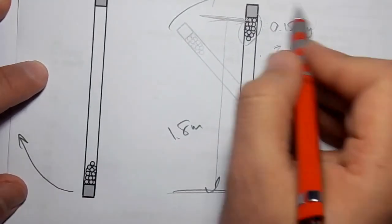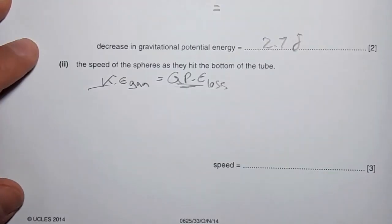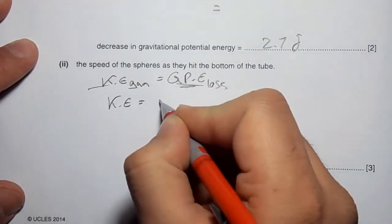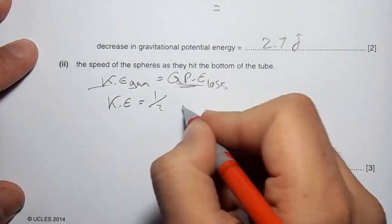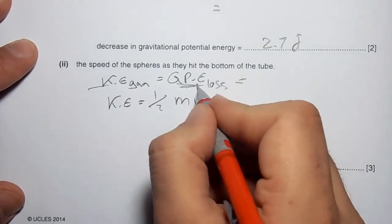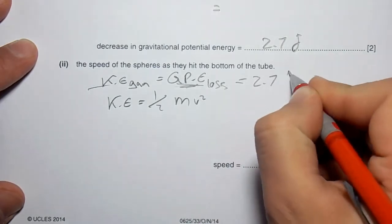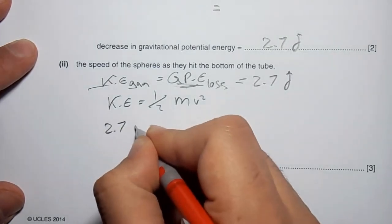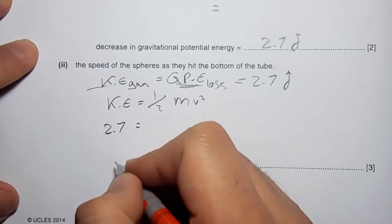Since potential energy here equals kinetic energy, and we know kinetic energy equals half m v squared, and the kinetic energy gained is the potential energy lost, then the kinetic energy is 2.7 joules.